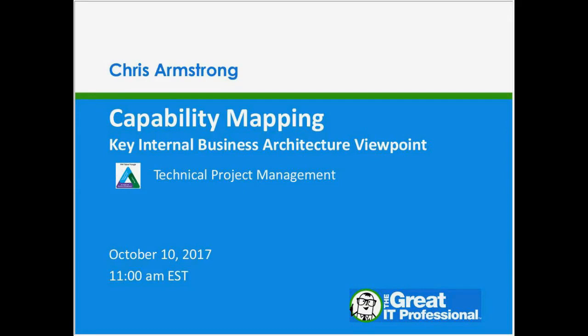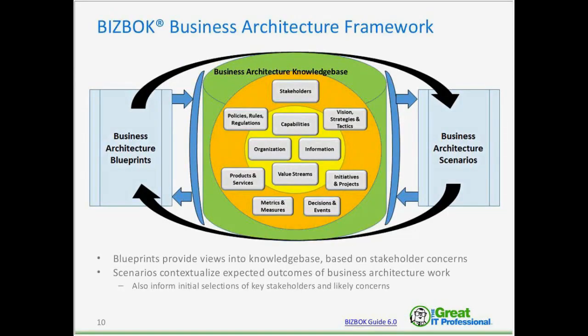This is actually a continuation of an earlier webinar where we went through value mapping as a critical business architecture viewpoint. Now we're going into the key internal business architecture viewpoint — capability mapping. Quite a bit of this content comes out of the BizBox Guide, which is the Business Architecture Body of Knowledge, and version 6 is the latest release, coming out about a month or so ago.